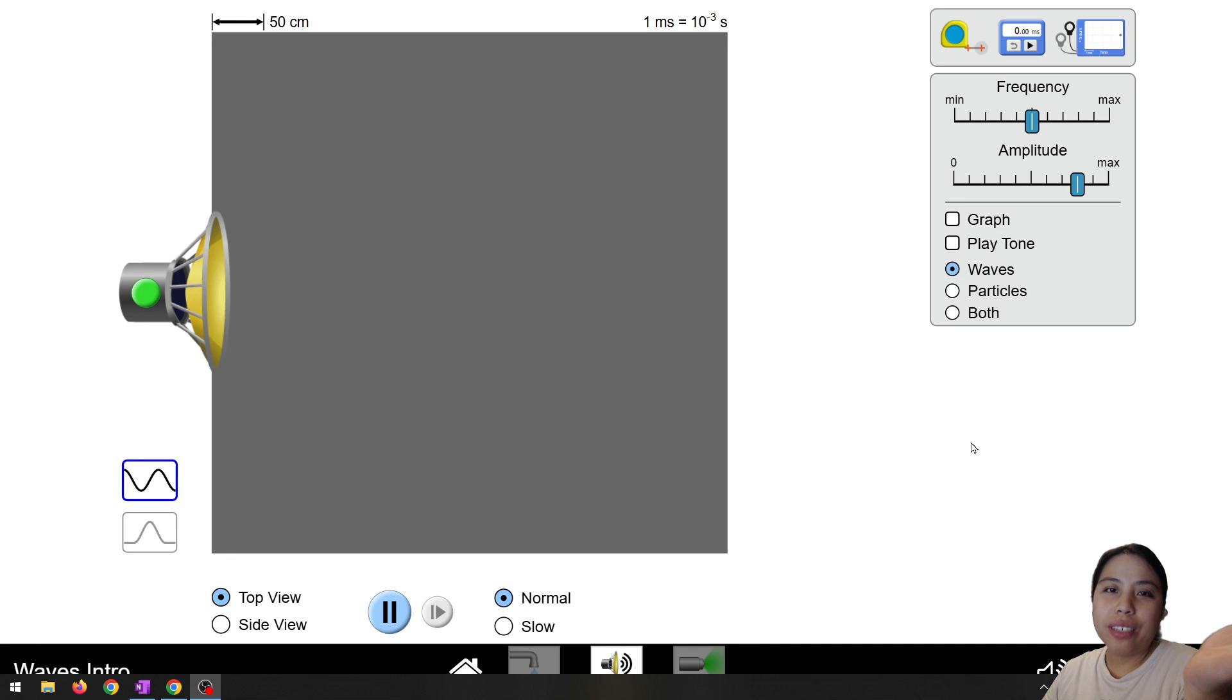Previously, we learned about things like amplitude, frequency, wavelength, and now we're going to zoom in on this term called wave intensity.